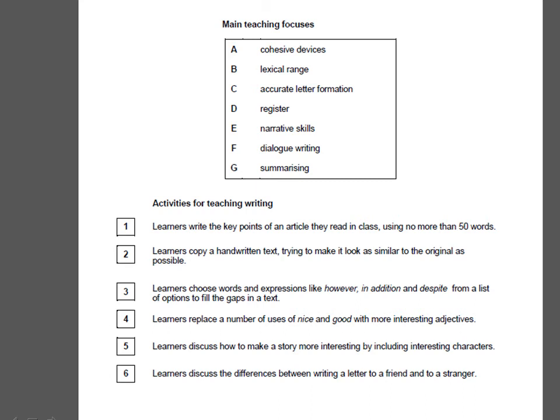Number 4: Learners replace a number of uses of 'nice' and 'good' with more interesting adjectives. This is lexical range. Number 5: Learners discuss how to make a story more interesting by including interesting characters. This is E — narrative skills.